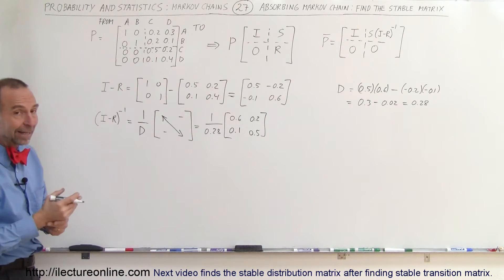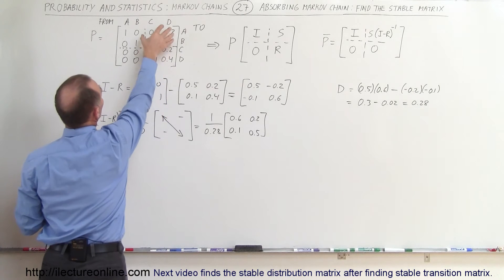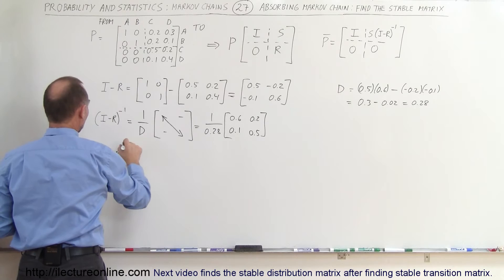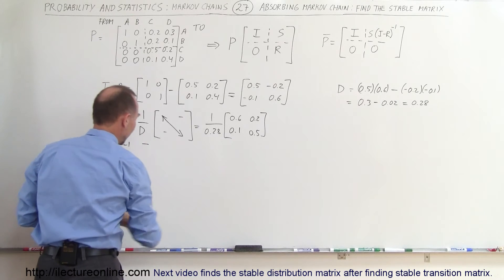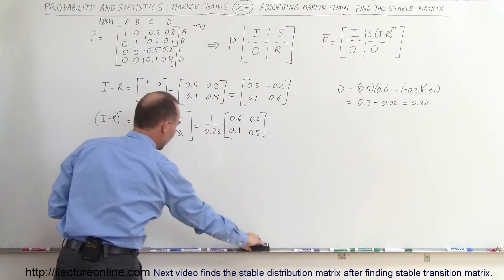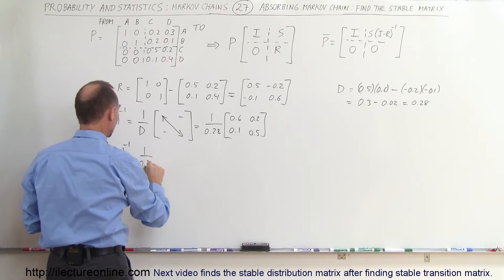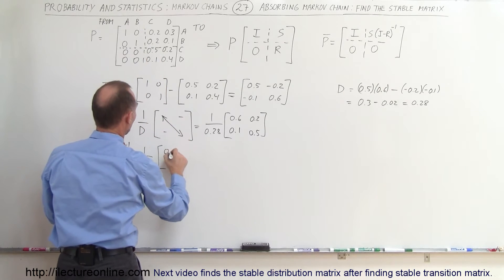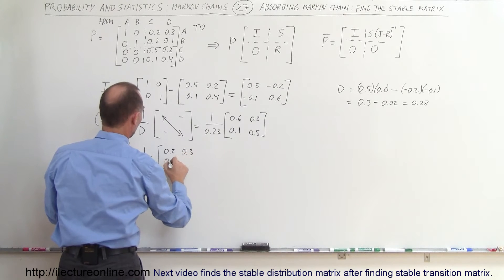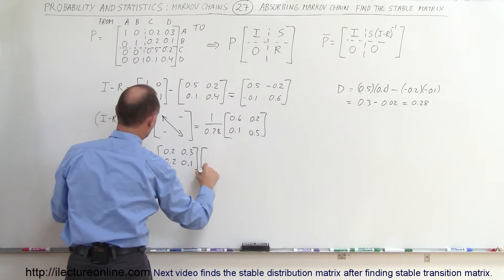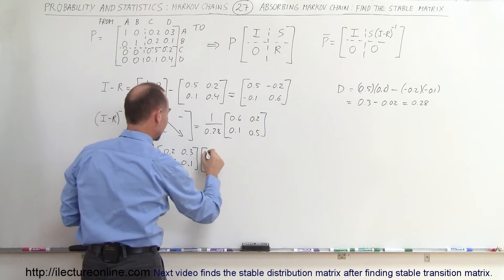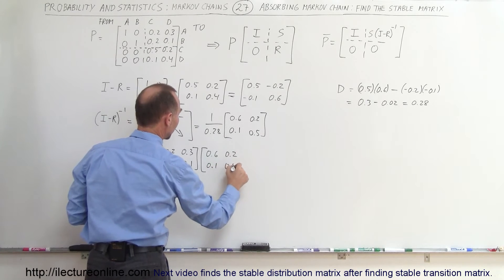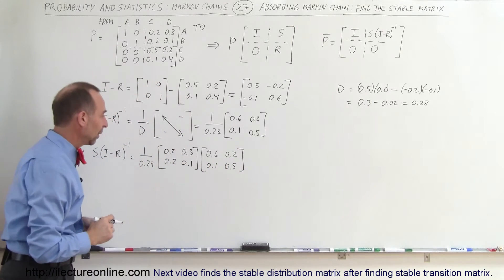Now we're going to multiply that by the S matrix. S times the quantity I minus R inverse is going to be equal to — and it's okay to move the 1 over determinant out — so this equals 1 over 0.28 times the S matrix, which is 0.2, 0.3, 0.2, 0.1, multiplied times the inverse portion of the matrix: 0.6, 0.2, 0.1, 0.5. Notice that we still have the 1 over 0.28 factor.